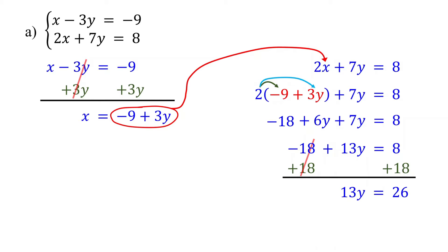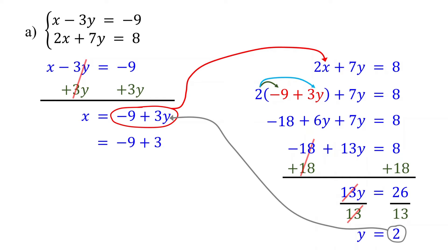Now, to isolate y, divide both sides by 13, and you get y equals 2. Now that we have the value of y, the next step is to find the value of x by plugging in 2 for y in this equation, which is basically the first equation solved for x. 3 times 2 is 6, and negative 9 plus 6 is equal to negative 3.